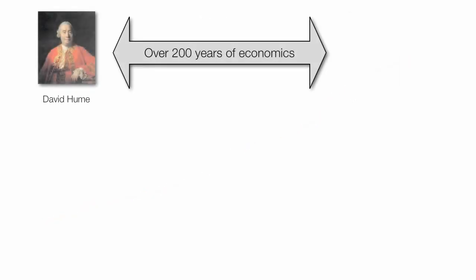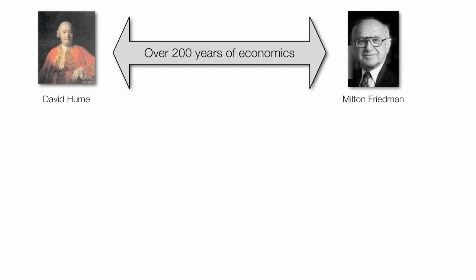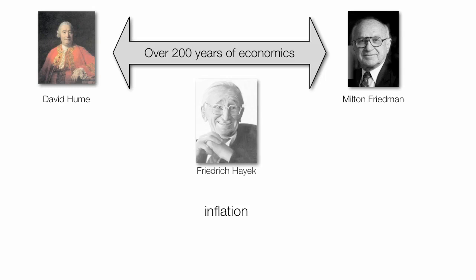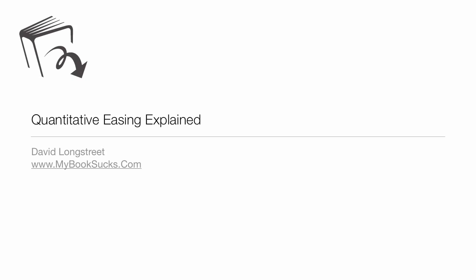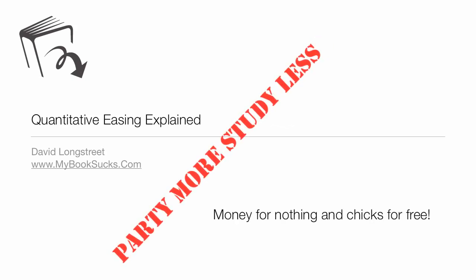Another theory, dating back to David Hume and going all the way to Milton Friedman — so about 200 years of economics — suggests we will have inflation. I should probably add Hayek in here as well; he's probably thinking, what are you guys doing? So that's been a little bit of quantitative easing to explain. I guess I took about four minutes of your life. So party more, study less.